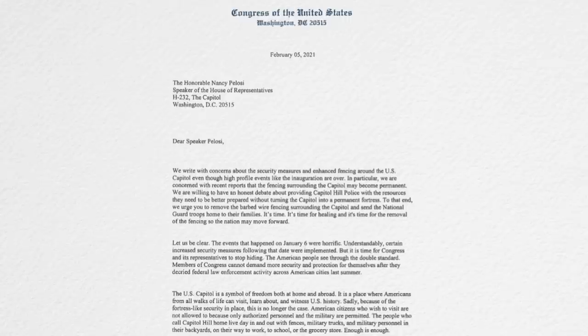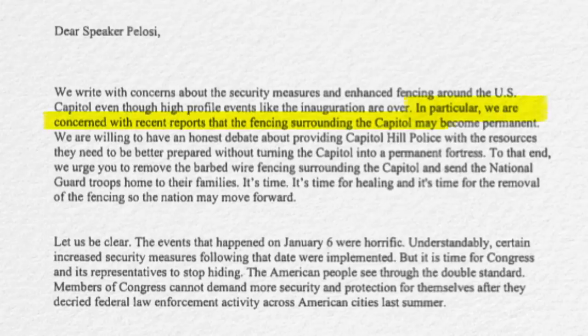One of the primary concerns it lists is: We are concerned with recent reports that the fencing surrounding the Capitol may become permanent. It continues: We are willing to have an honest debate about providing Capitol Hill police with the resources they need to be better prepared without turning the Capitol into a permanent fortress. It's time for healing, and it's time for the removal of the fencing so that the nation may move forward. They mention reports that the fencing may become permanent, referencing a statement from the Capitol Police Force's acting chief, who said that permanent fences should be part of the vast improvements in security needed to protect the building and lawmakers.